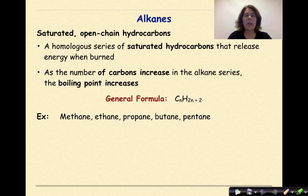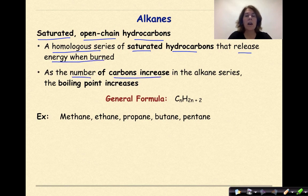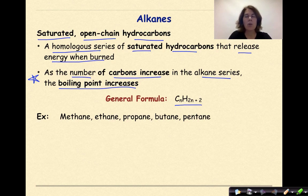Let's start with alkanes. Alkanes are saturated, open-chained hydrocarbons — saturated meaning all single bonds, open-chained meaning no rings, and hydrocarbon meaning only hydrogen and carbon are involved. It's a homologous series of saturated hydrocarbons that release energy when burned. As the number of carbons increases in the alkane series, the boiling point increases. The general formula is CnH2n+2. We're going to look at methane, ethane, propane, butane, and pentane. Make sure you have your notes out and are copying these down as a reference.